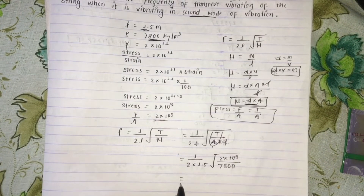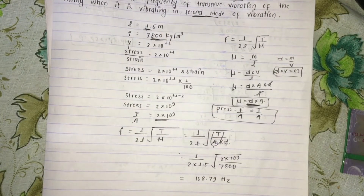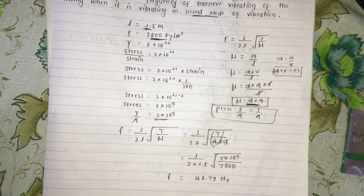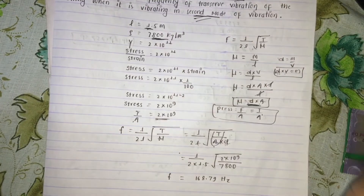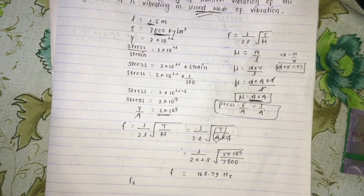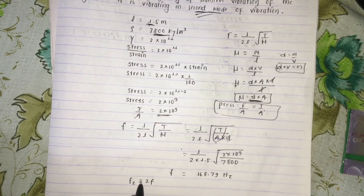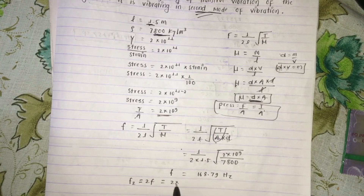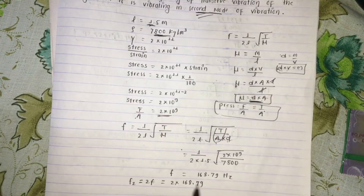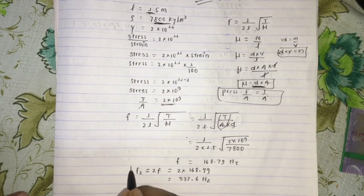Calculating the result: f equals 1 by 2 into 1.5 times root of 2 times 10 to the power 9 by 7800, giving approximately 168.7 Hz. The second harmonic frequency is two times this value, approximately 337.6 Hz.